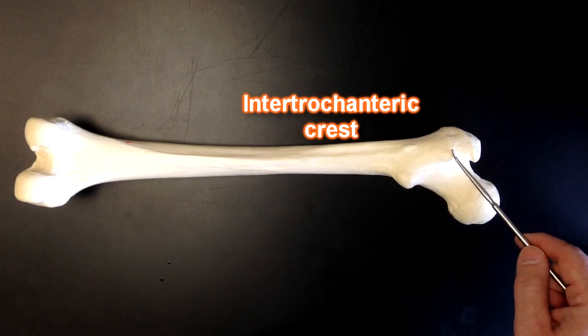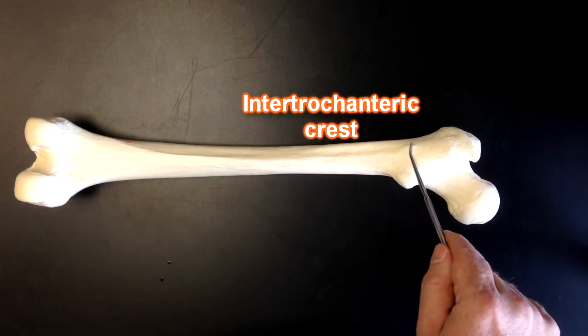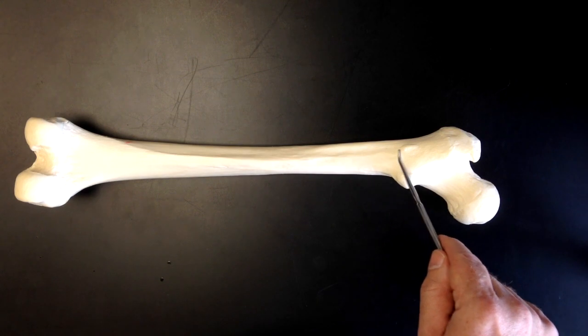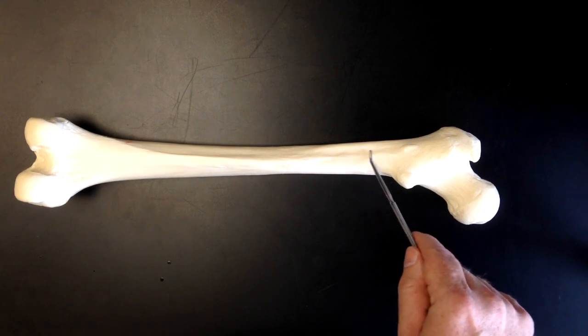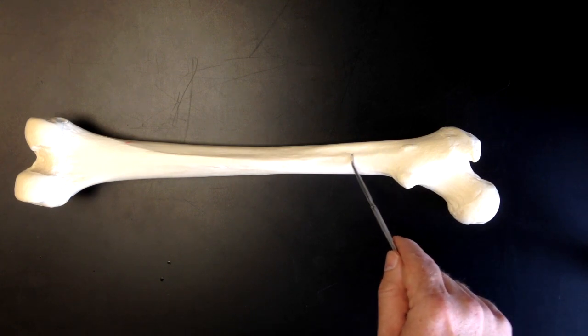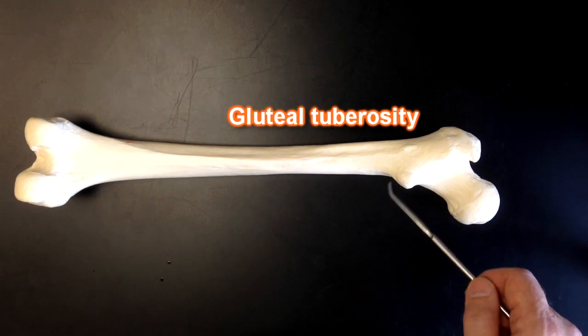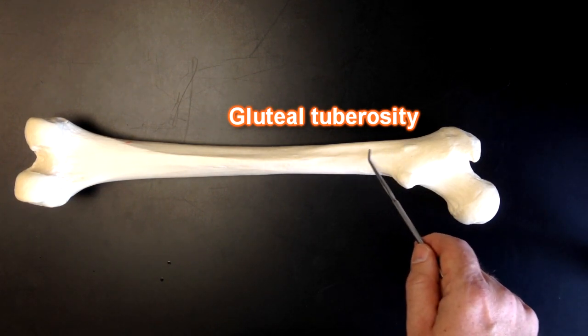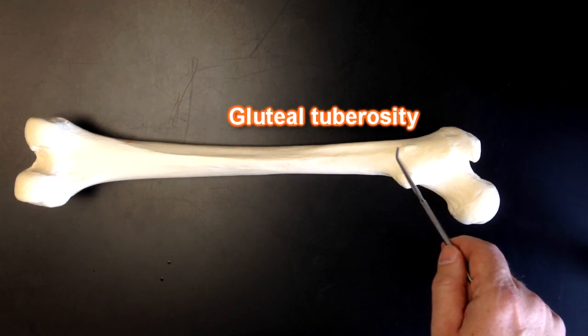And then we see this roughened area just distal to that. That roughened area right there is called the gluteal tuberosity. That's going to be one of the sites of attachment for the gluteus maximus muscle.